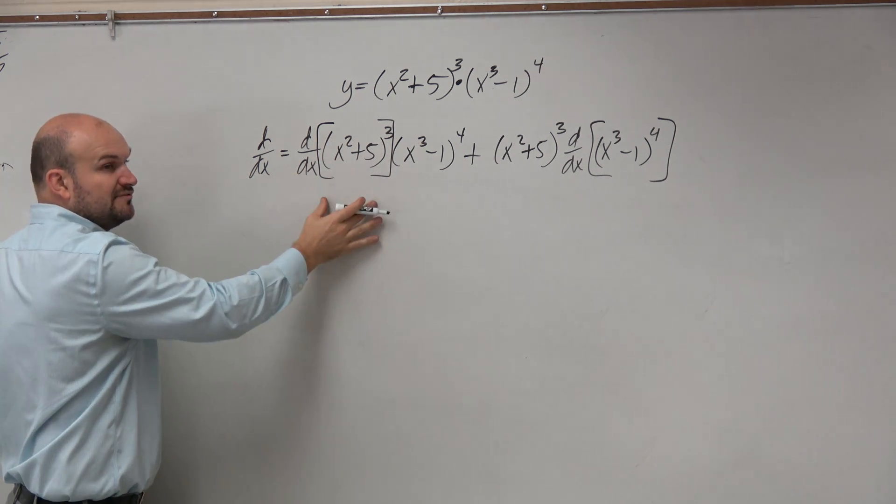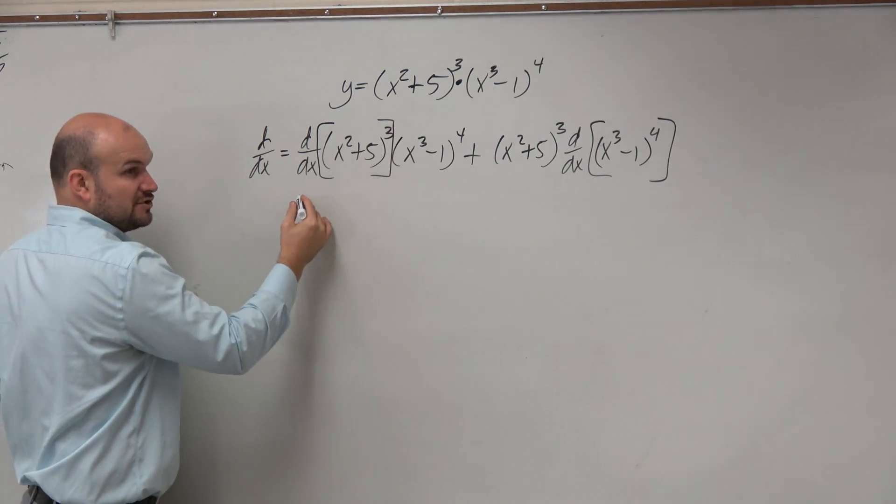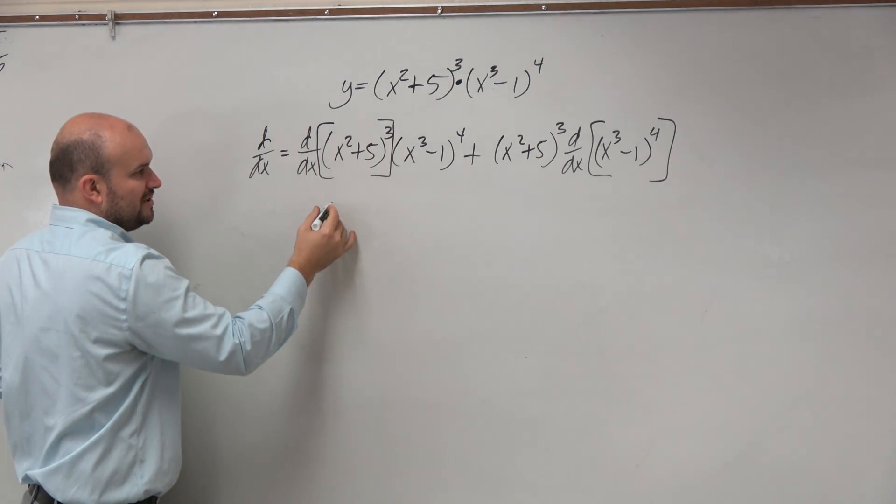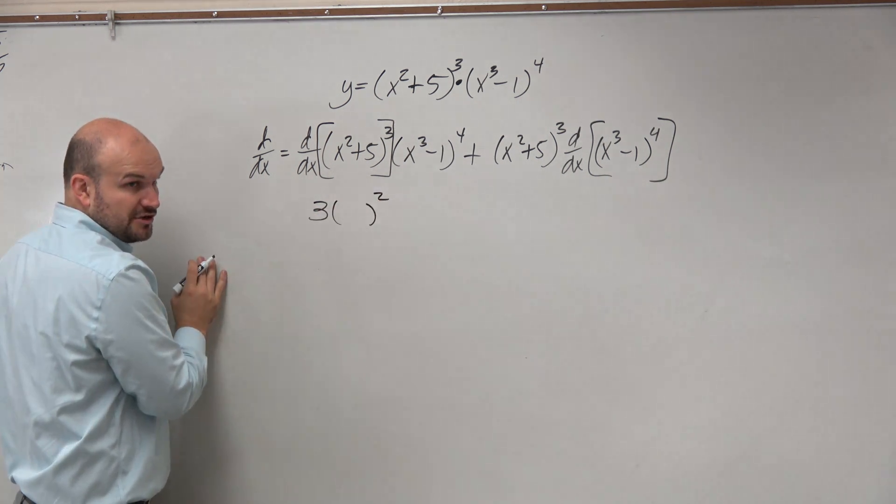Here, I need to take the derivative using the chain rule. So I would say that my parent function would be x cubed, right? So let's go ahead and find the derivative of x cubed, which would be 3x squared. You guys agree with me?